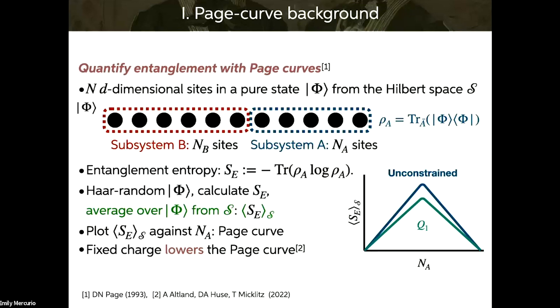Say we had multiple charges — we'd expect it to lower further. Assume for now these charges commute with one another, so we have an abelian symmetry. Now, what if we could flip a switch and make those charges not commute? Would we expect the page curve to go further down — further restricting the Hilbert space — or maybe for some reason the page curve would move back up towards the unconstrained case? So we're asking: if we turn on non-commutation, does the page curve go lower or back towards the unconstrained case?